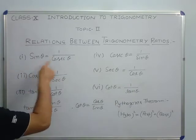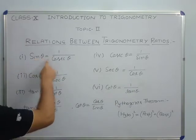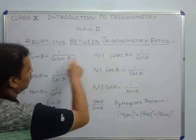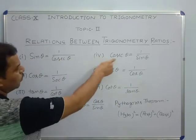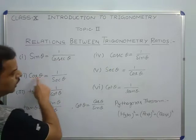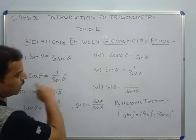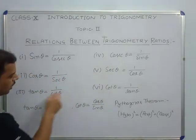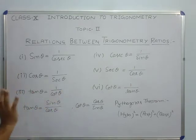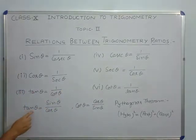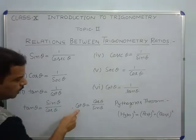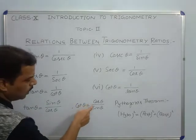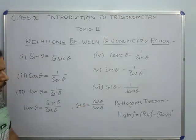You can see here that sin theta and cosec theta are reciprocal to each other, cos theta and sec theta are reciprocal to each other, and tan theta and cot theta are reciprocal to each other. Two more relations: tan theta equal to sin theta upon cos theta, and cot theta equal to cos theta upon sin theta.